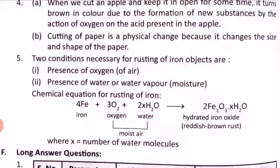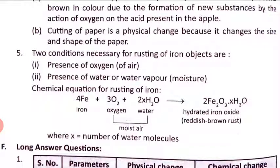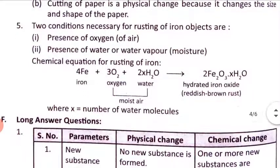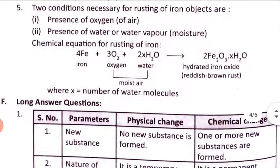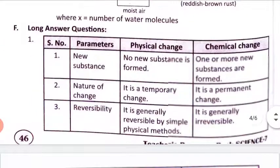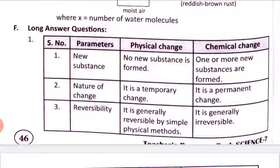Fifth question: state two conditions necessary for rusting of iron objects, and write the chemical equation. Two conditions necessary for rusting of iron: first, presence of oxygen; second, presence of water or water vapor. The chemical equation is: 4Fe + 3O₂ + xH₂O = 2Fe₂O₃·xH₂O, where x is the number of water molecules.